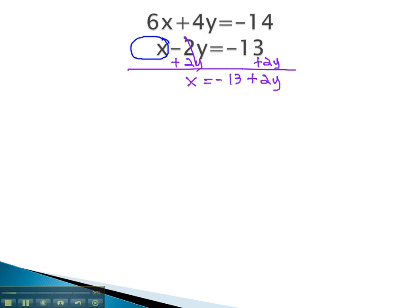We now have the x equals equation we need to make a substitution. x is equal to this expression, and we can replace the x in the other equation with that expression. 6x becomes 6 times negative 13 plus 2y, plus 4y, equals negative 14.